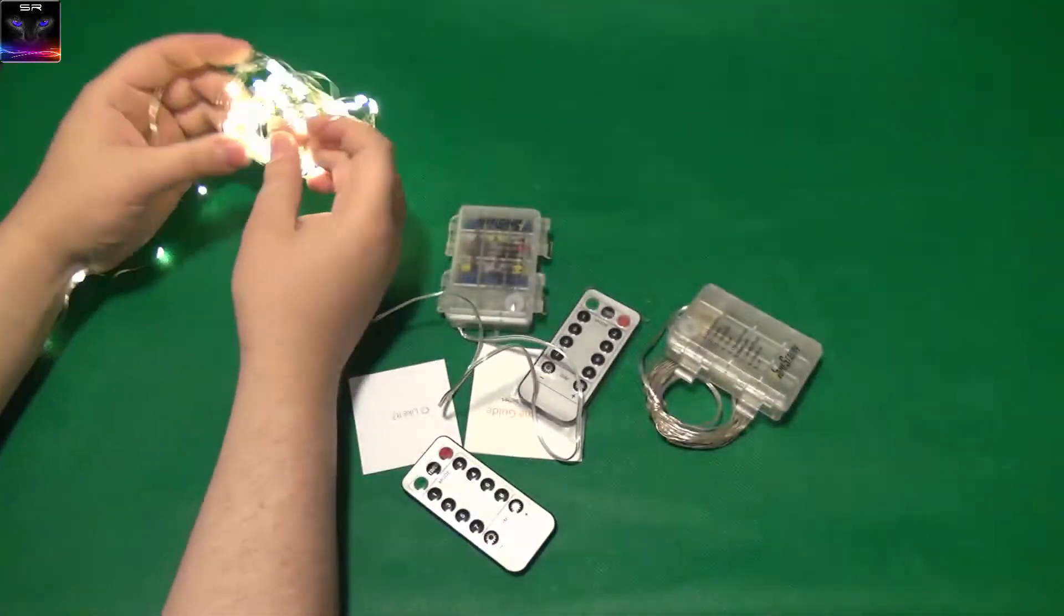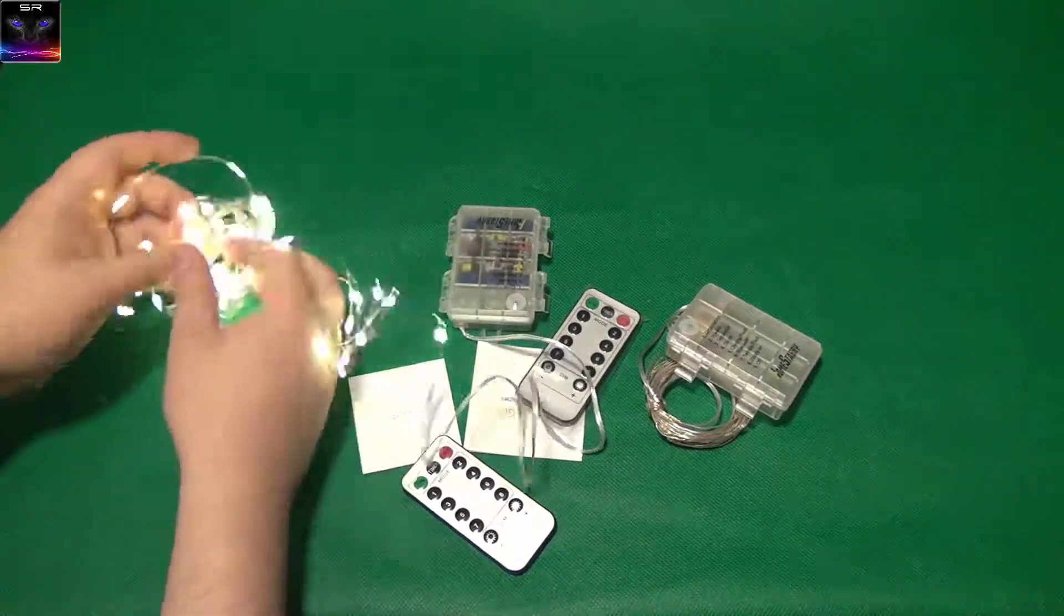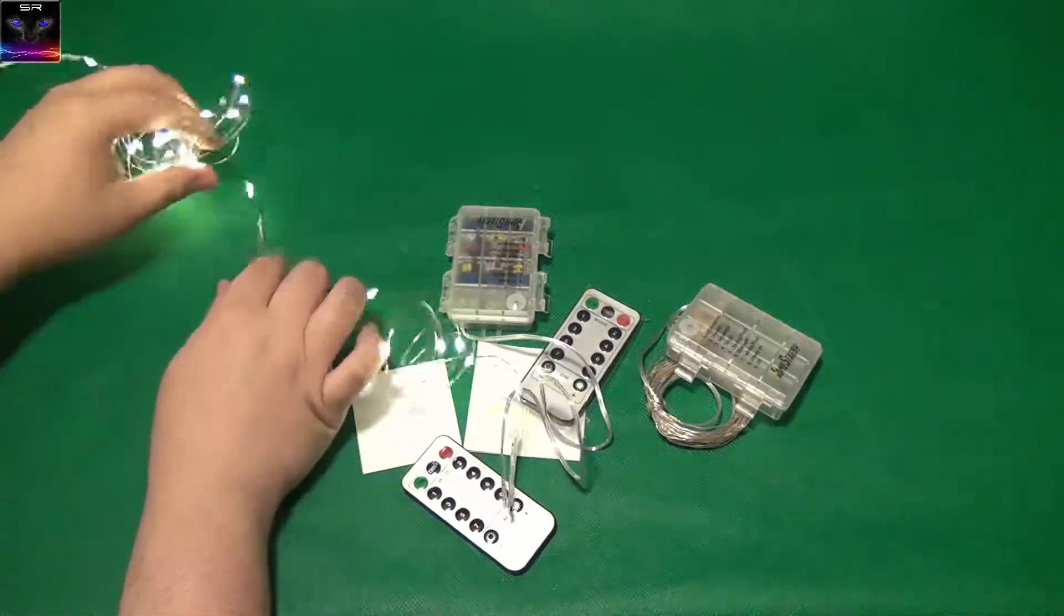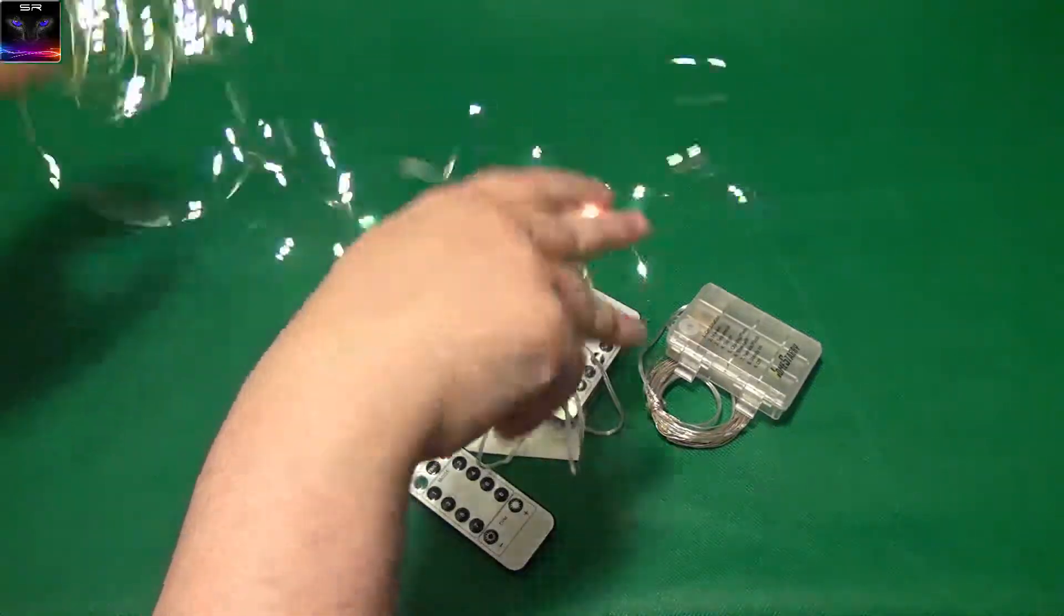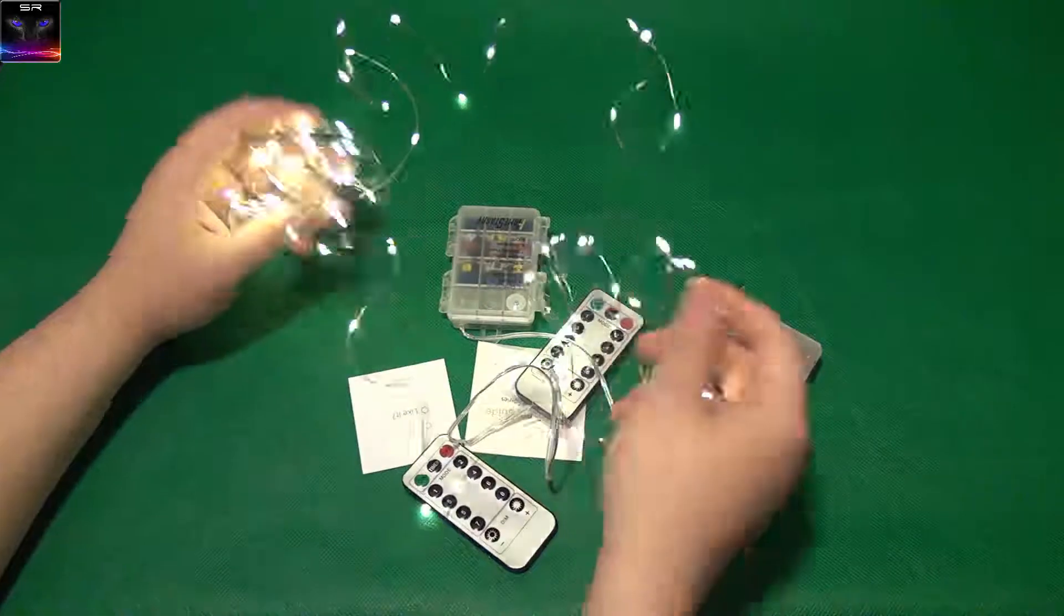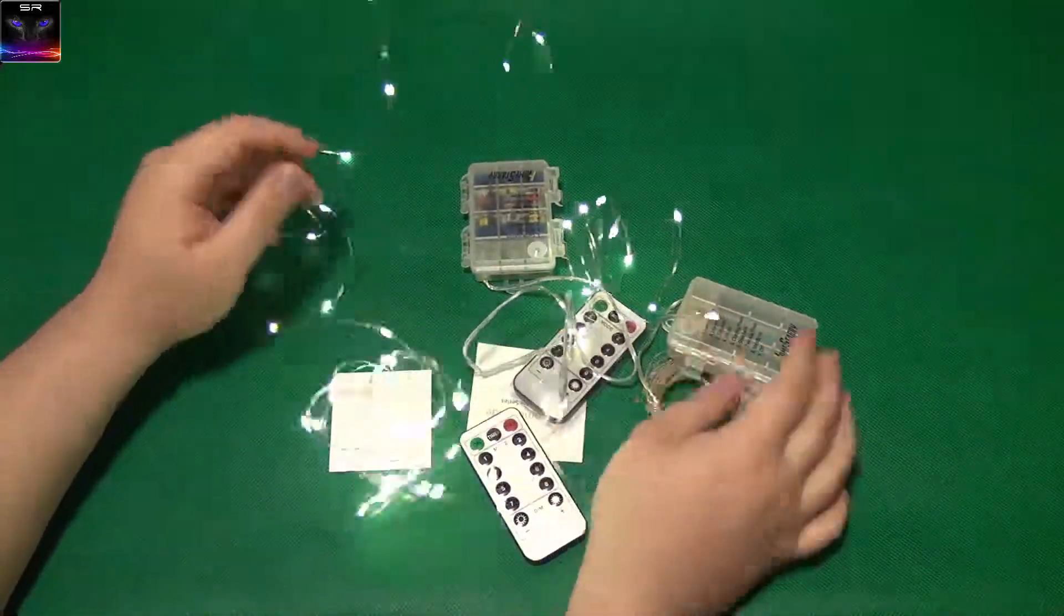Brightness-wise, they're quite bright. I'm not still sure how long they are. I think it's like five meters or something. Yeah, it's pretty much sure it's five meters. That's how they look like. It's not colored, it's just a white color.